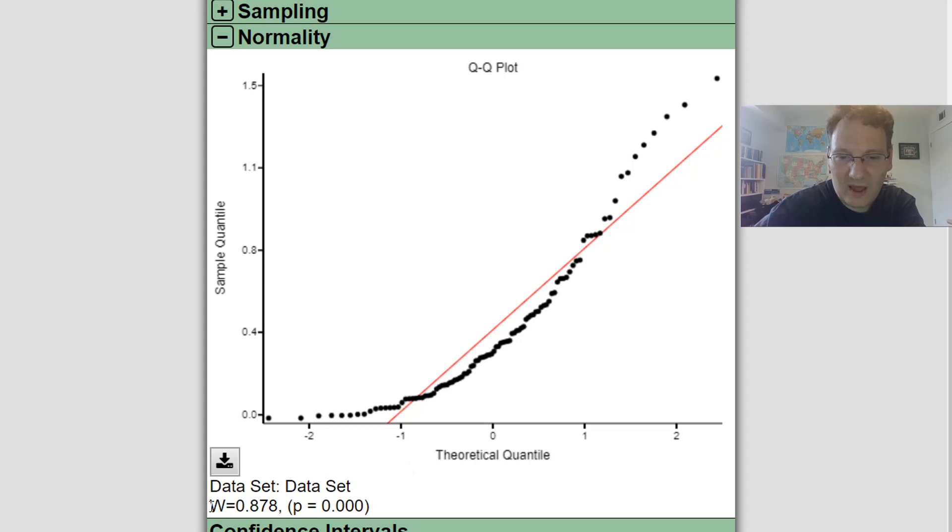Down below, we've got a test called the Shapiro-Wilk test. And what you get is a test statistic, a W statistic. I guess Shapiro got the short end of the stick, and they called the statistic a W statistic. And you've got a p-value. What this is a p-value for is a hypothesis test, which says null hypothesis, the data was drawn from a normal distribution. Alternative hypothesis, it wasn't drawn from a normal distribution.